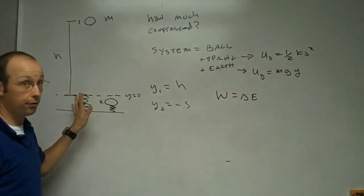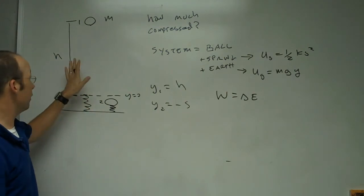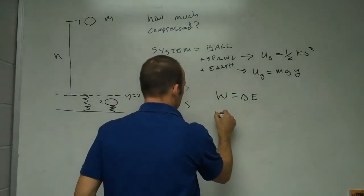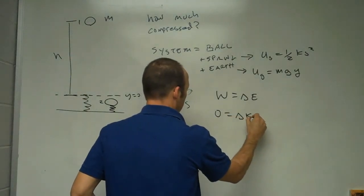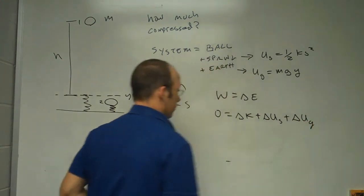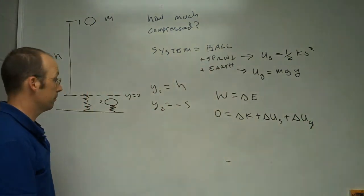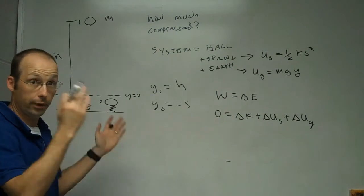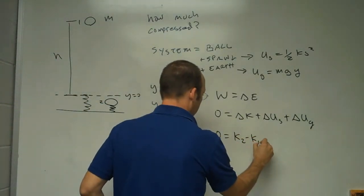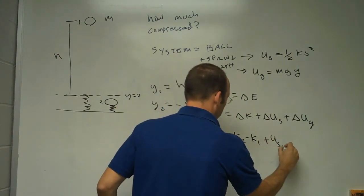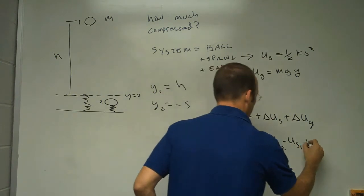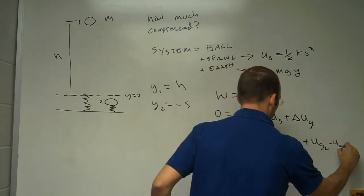Now I can use the work-energy principle. Since gravity and the spring are both part of the system, there's no external work done. So I have: change in kinetic plus change in spring potential plus change in gravitational potential equals zero. That gives us: zero equals K2 minus K1, plus Us2 minus Us1, plus Ug2 minus Ug1.